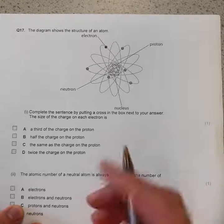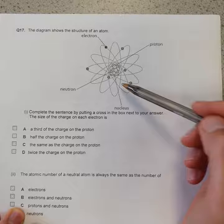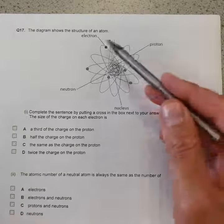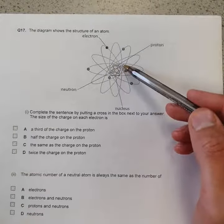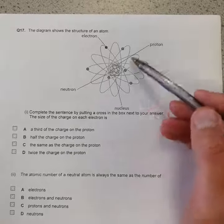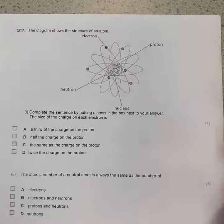Question 17. The diagram shows the structure of an atom. So this is one way to model an atom with all the electrons around the outside and the nucleus in the middle with the neutrons and protons contained in it.